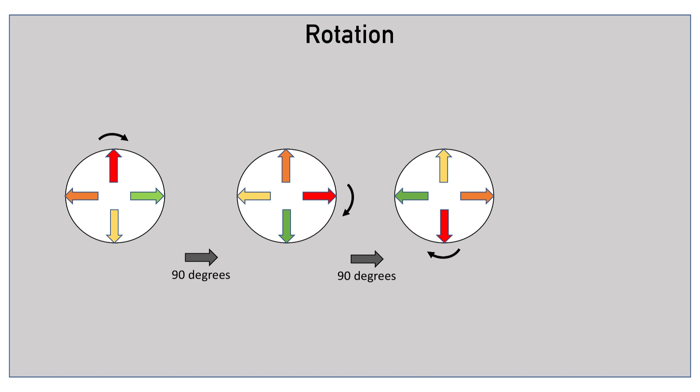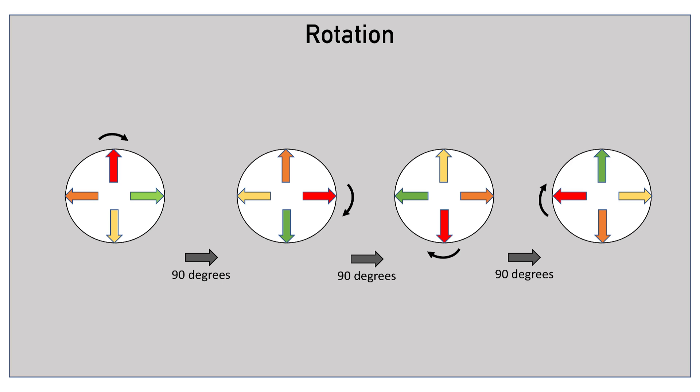Applying another 90-degree rotation clockwise to the circular object brings the red arrow pointing downward. Applying yet another 90-degree rotation clockwise brings the red arrow pointing left.